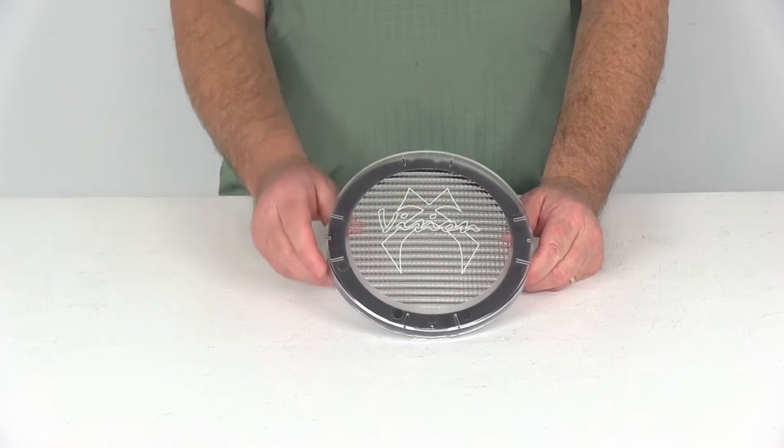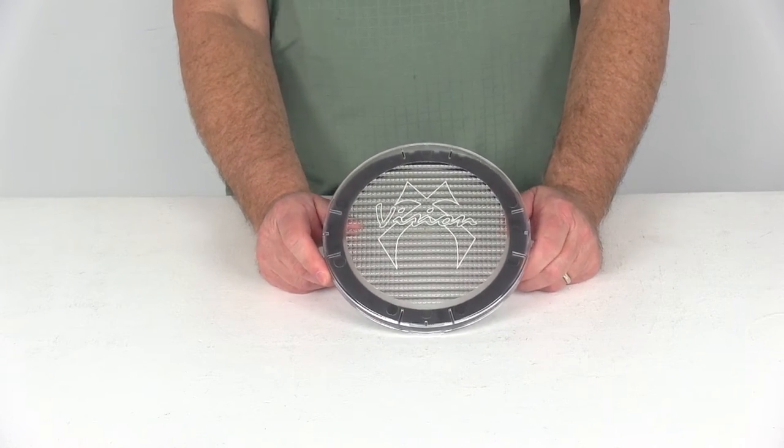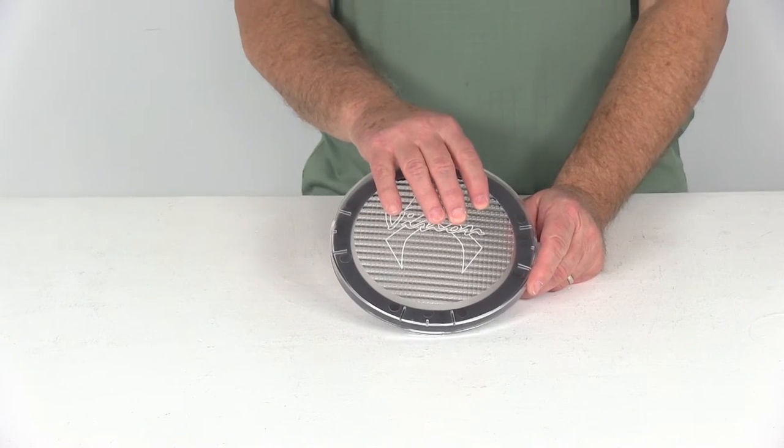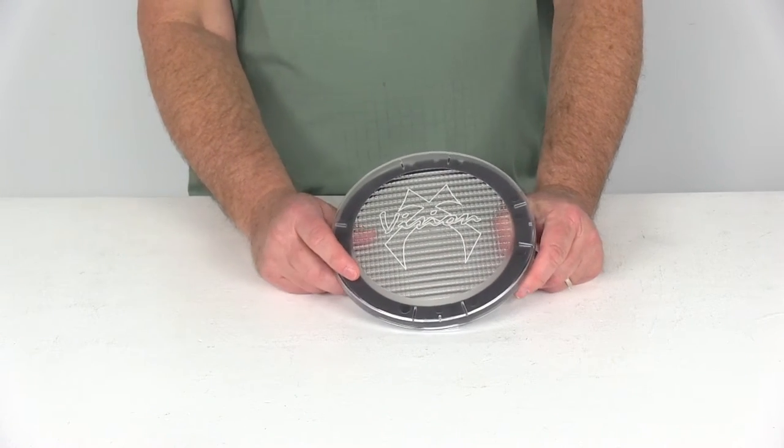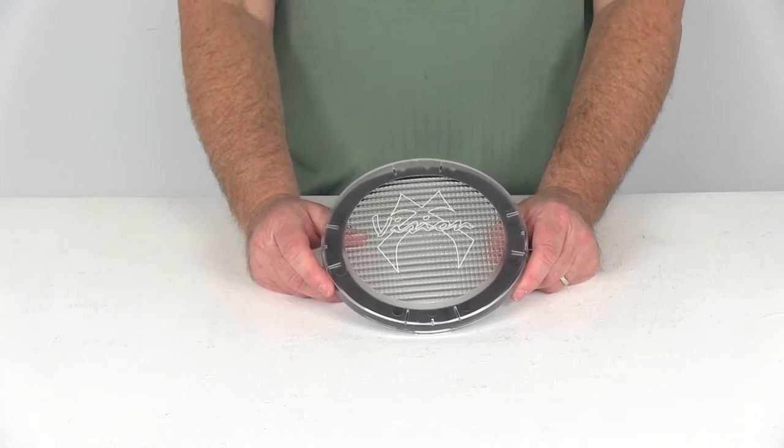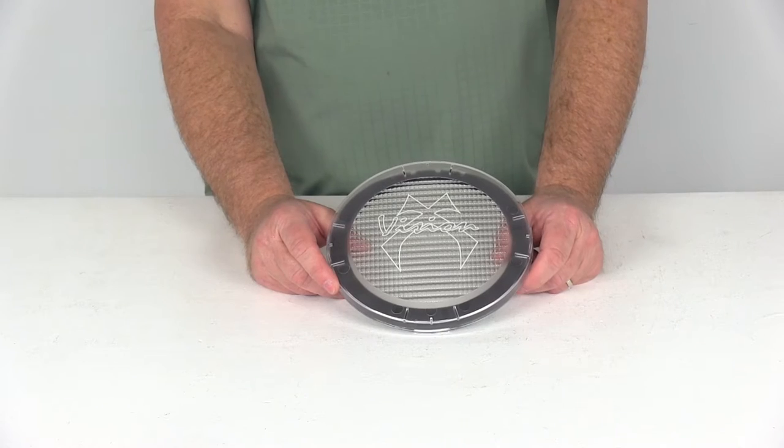This cover will create a nice flood beam pattern for your off-road light. It works with VisionX 6.7 inch cannon and transporter off-road lights. This will give you a flood beam pattern which provides both forward and peripheral lighting. It's great for commercial and industrial applications.